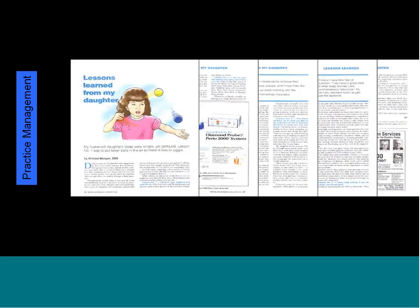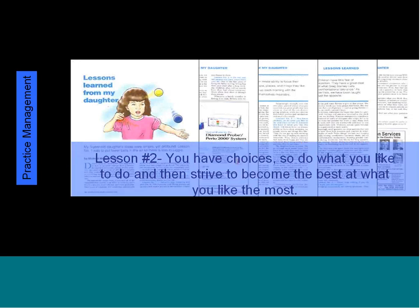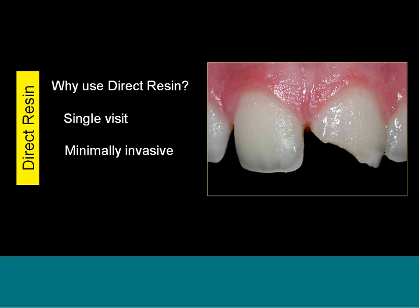A few years back I wrote an article called 'Lessons Learned from My Daughter.' One of the premises was that we all have choices. As dentists, we have choices — we can do what we want to do. In my practice, we're pretty focused on aesthetics and function, and in particular I do a lot of cases in composite. So why do we use direct resin? Why don't we just prep teeth and send them to the lab for porcelain? Well, first of all, it's a single-visit procedure, which means the patient doesn't have to come back as many times.